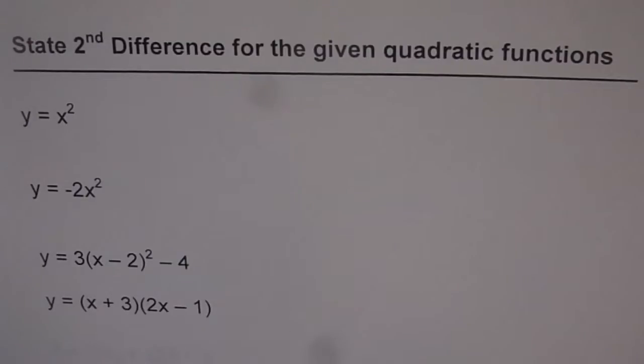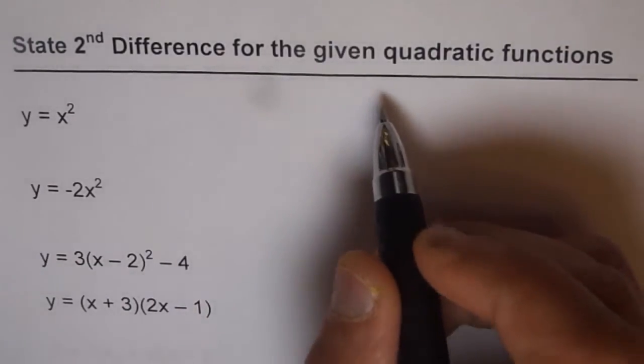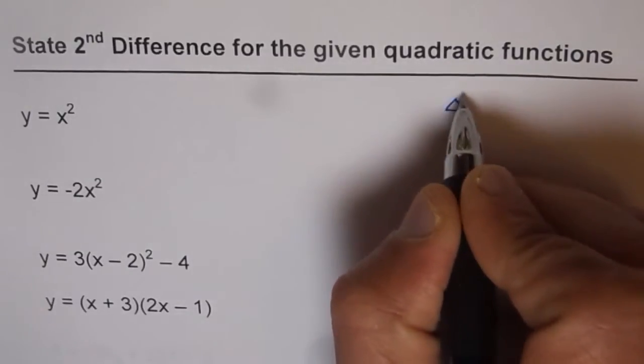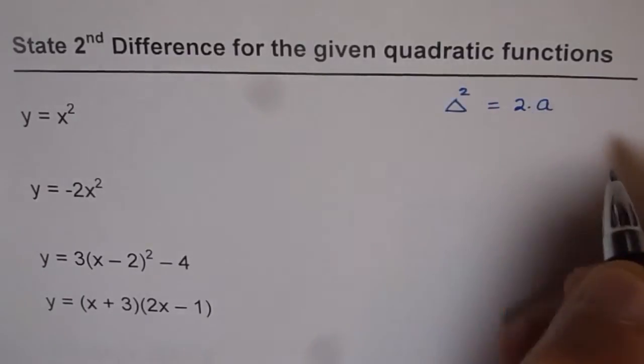Now as we discussed in the very first video, the relation between the second difference and the quadratic function is that second difference equals 2 times a, the leading coefficient.